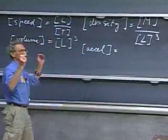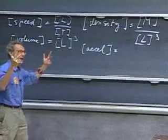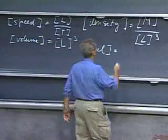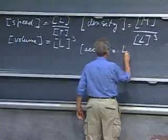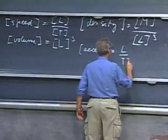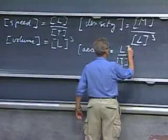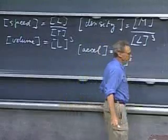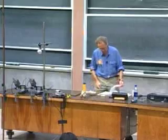Acceleration, as you will see, is length per time squared. The unit is meters per second squared. So you get length divided by time squared. So all other quantities can be derived from these three fundamentals.